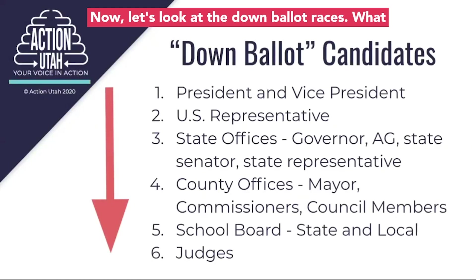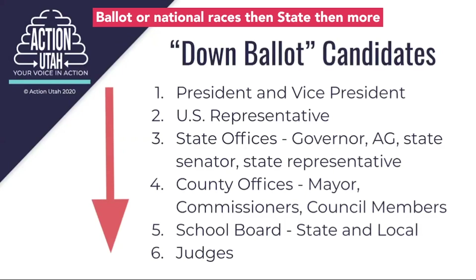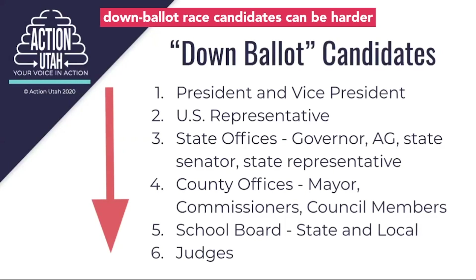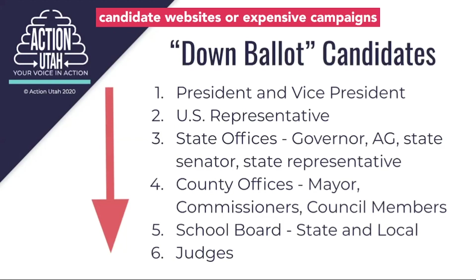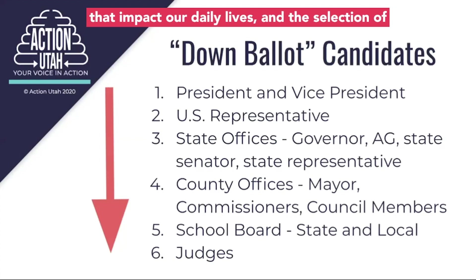Now let's look at the down ballot races. The term "down ballot" comes from the physical location of where races are listed on your ballot. At the top of your ballot are national races, then state, then more and more local as you move down the ballot. These down ballot race candidates can be harder to learn about as they don't generally have candidate websites or expensive campaigns to get out the word about them. Therefore, a lot of people skip these races and don't cast a vote on them at all. But many of the down ballot offices serve government functions that impact our daily lives, and the selection of these elected officials is very important.